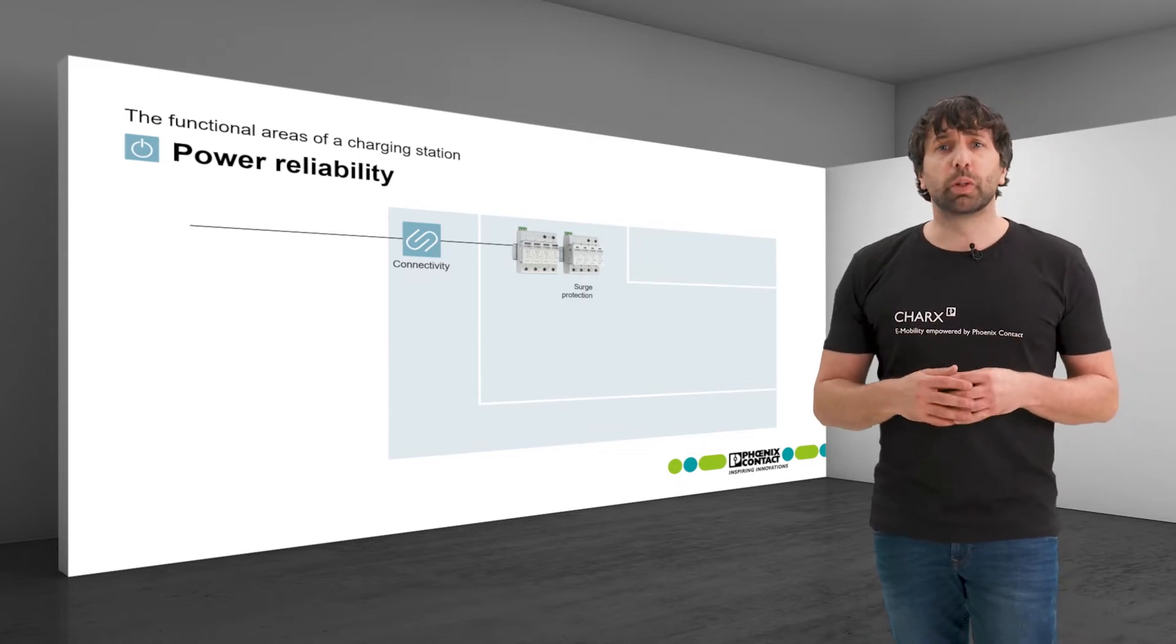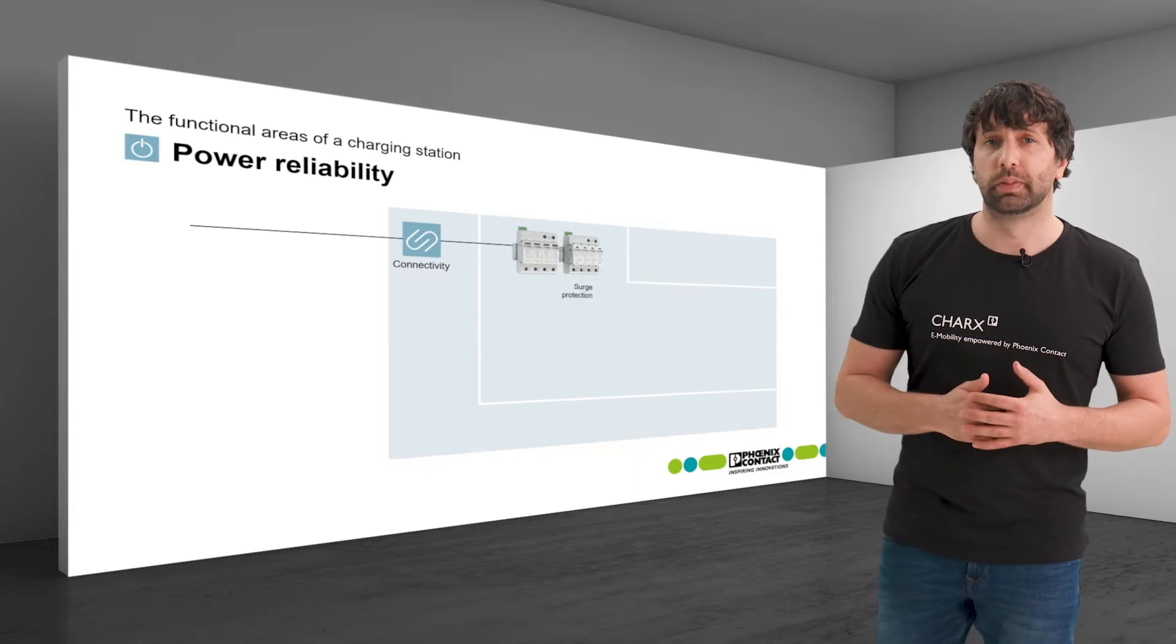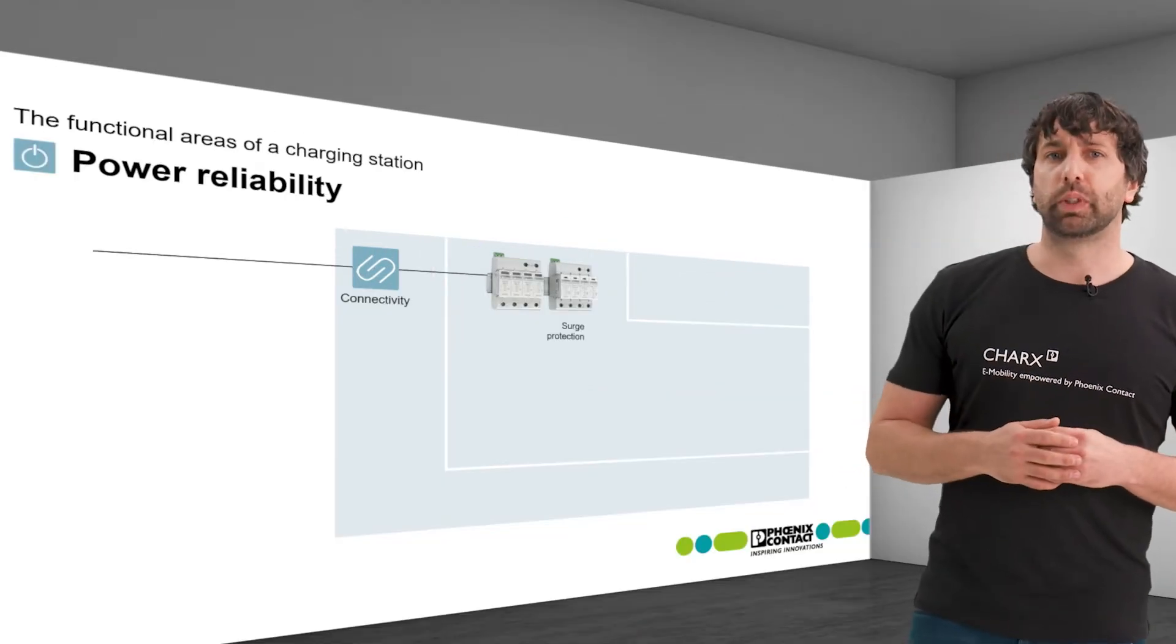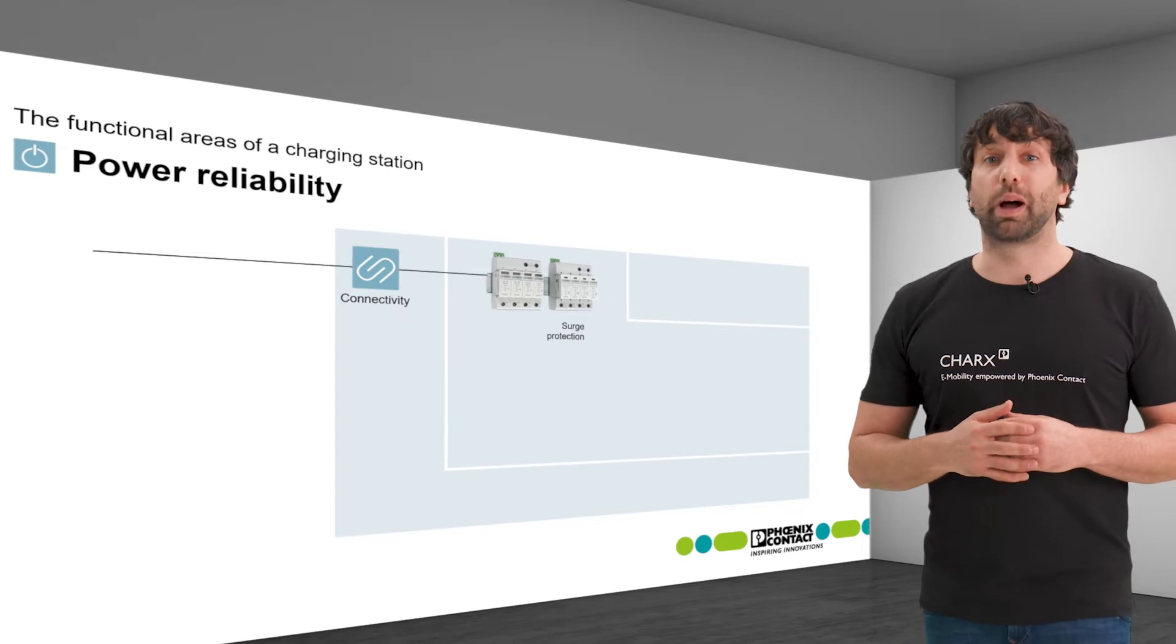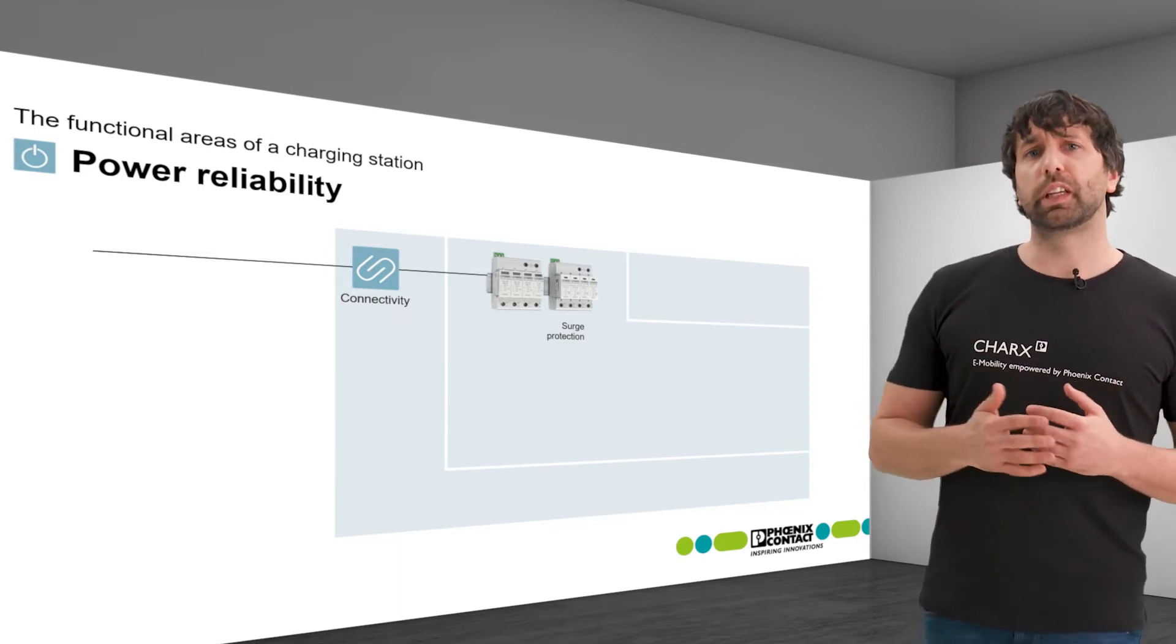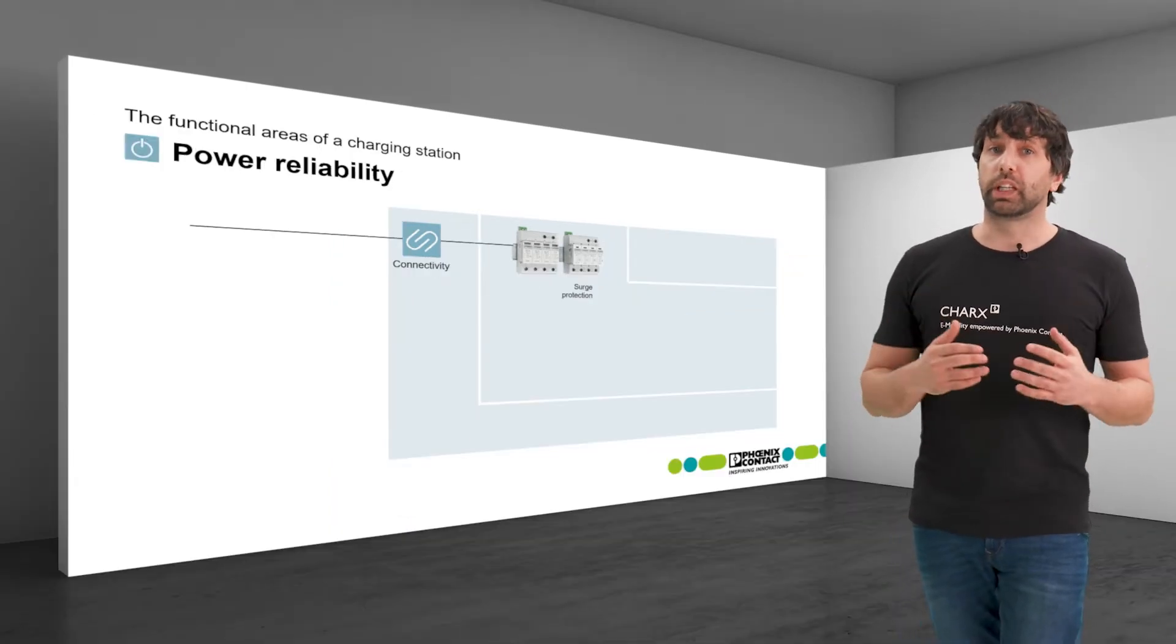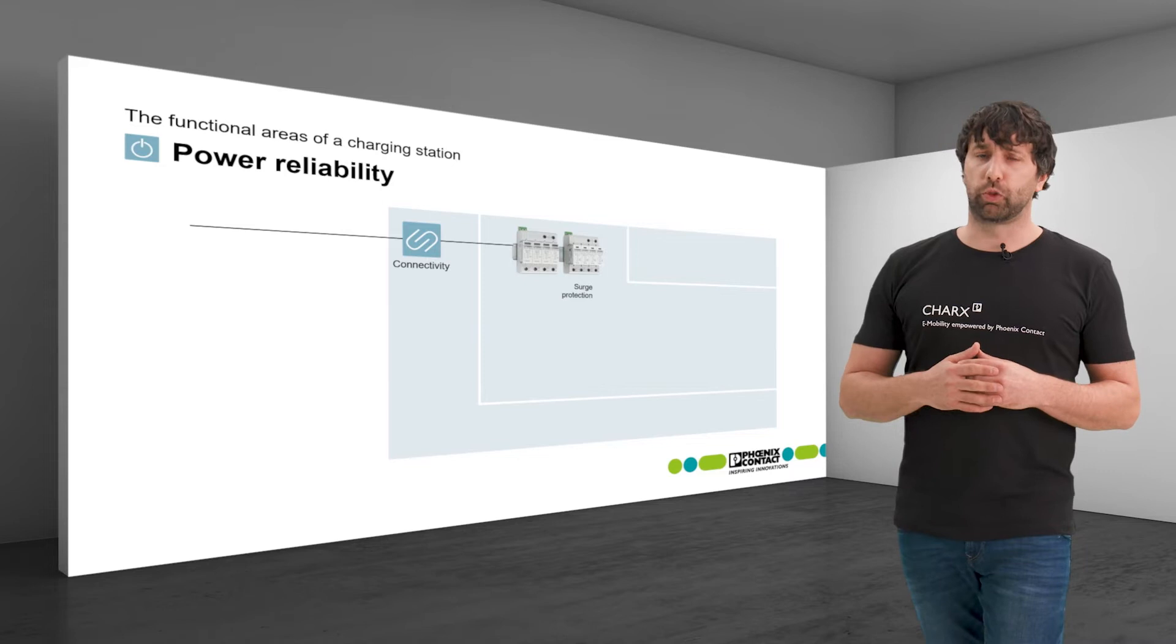Thanks to its pluggable modules it is quick and easy to maintain in case of an error. Combined lightning current and surge protective devices, so-called combined type 1 and 2 arrestors, can disconnect up to 50 kA. Simple type 2 arrestors up to 40 kA are sufficient for home chargers.